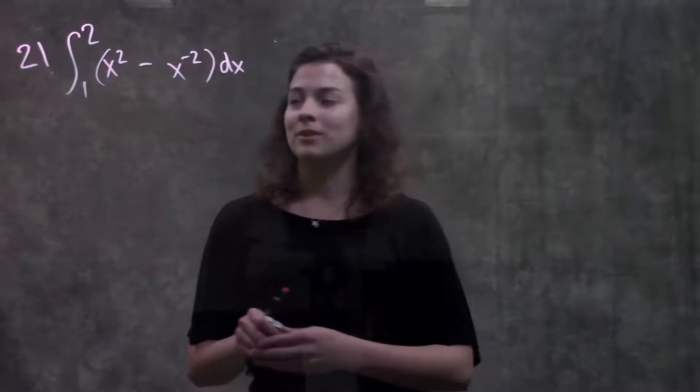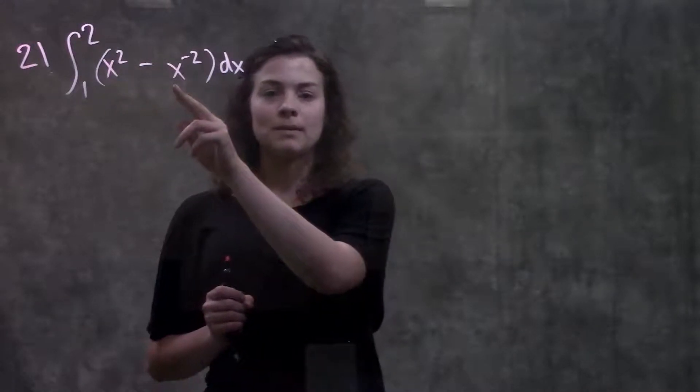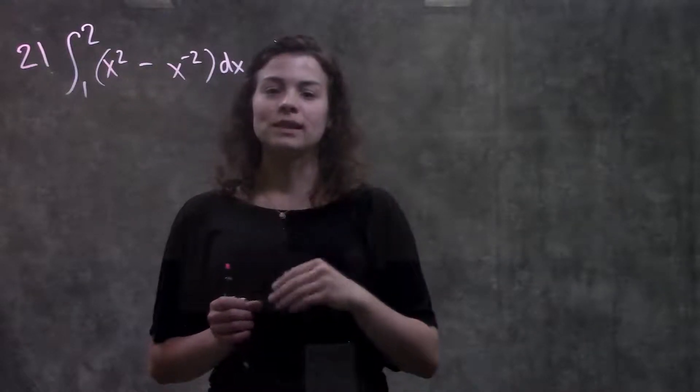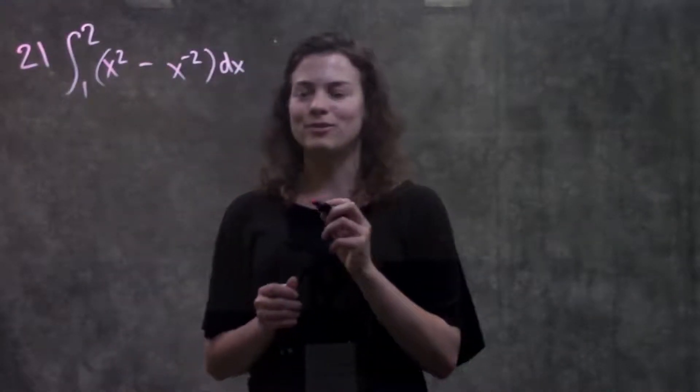So the way we do these types of problems is first we need to take the integral of this function, and then we just plug in our top number into the integral, and then subtract everything that we get when we plug in our bottom number. So let's go ahead and go through this.